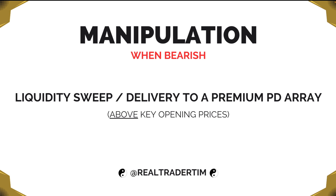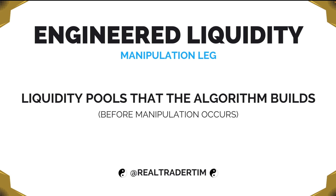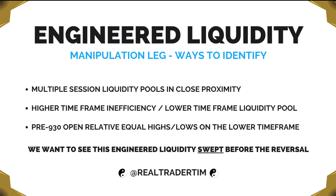Now let's discuss engineered liquidity — different ways to identify it and how we can utilize it in building a narrative. During the manipulation leg, engineered liquidity refers to liquidity pools that the algorithm builds before the manipulation occurs. Some ways to identify this: when we have multiple session liquidity pools in close proximity, when we have a higher time frame inefficiency coupled with a lower time frame liquidity pool, or when we have pre-9:30 open relative equal highs or lows on the lower time frame.